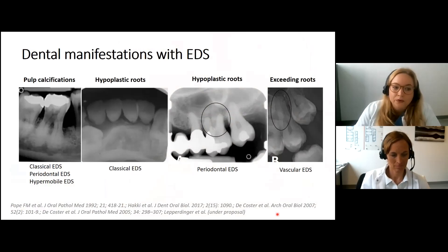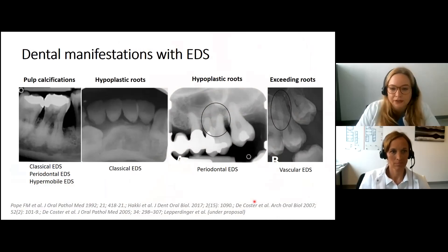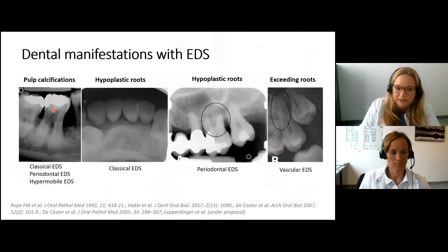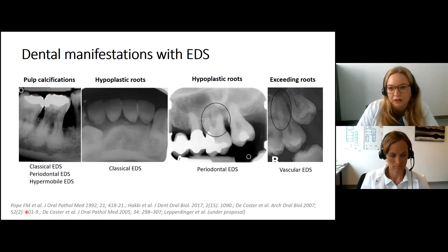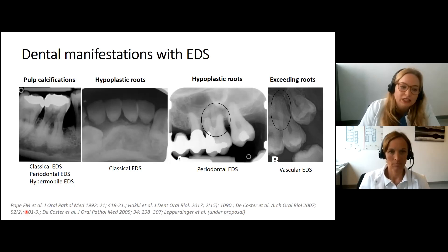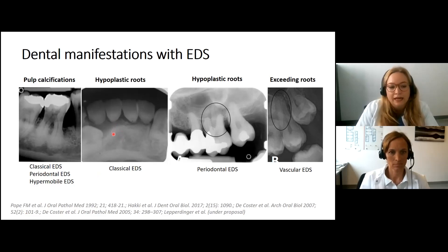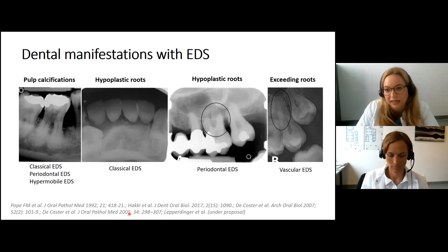What we know is that all kinds of EDS are associated with pulp stones. If you look at the picture, the dental nerve appears as a grayish part in the middle of the crown, and within it are white calcifications — actual stones. They don't hurt or cause discomfort, but if root canal treatment is needed, they can block access to the root canal and make the dentist's work more complicated. With classical EDS, we have seen strongly shortened roots or even no roots, and these teeth are very loose, which can sometimes be misinterpreted as localized periodontitis.